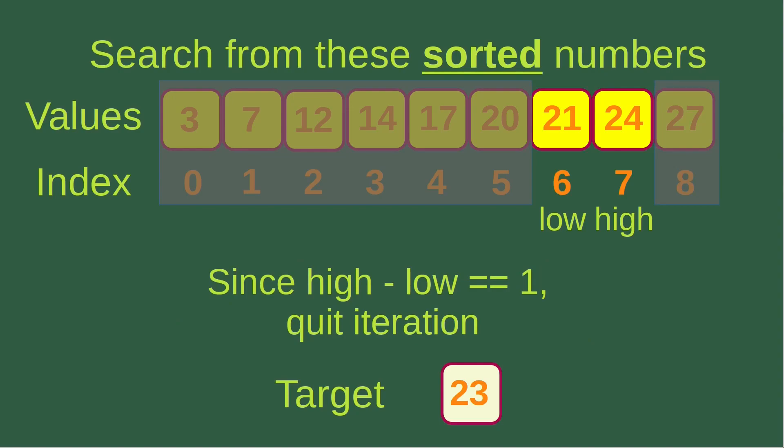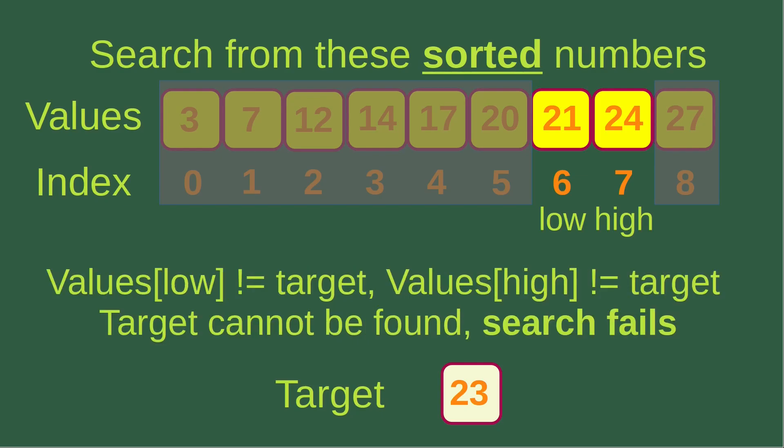Checking the condition: seven minus six equals exactly one, so I quit the iteration. I check whether the low or high index corresponds to the target. The low index corresponds to 21, which is not equal to 23, and the high index corresponds to 24, which is also not equal to 23. Since neither matches, the target cannot be found in the array — the search fails.